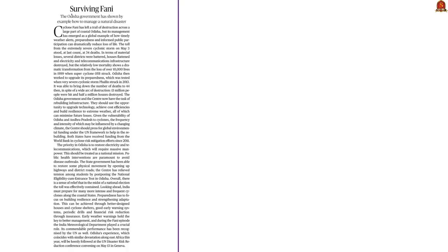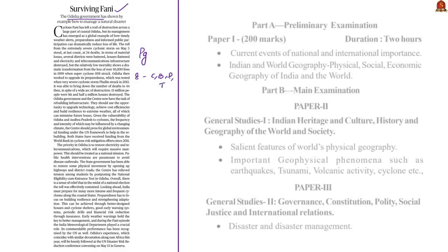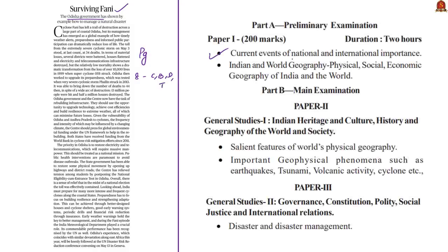Moving on to the next discussion, which is based on an editorial about Cyclone Fani and the preparedness of the Odisha government in managing the natural disaster. This editorial has appeared on page 8 in all four editions. It will be helpful in prelims under current events of national importance and Indian physical geography, and in mains under GS Paper 1 — salient features of world physical geography and important geophysical phenomena such as cyclones — and also GS Paper 3 under disaster and disaster management.